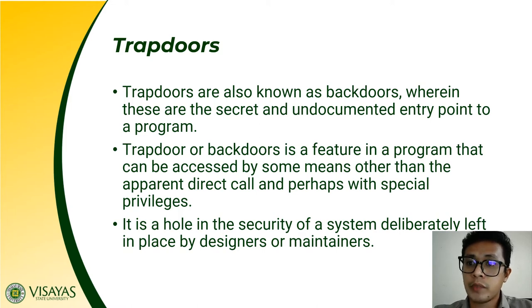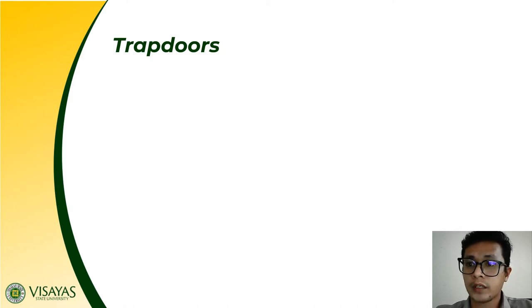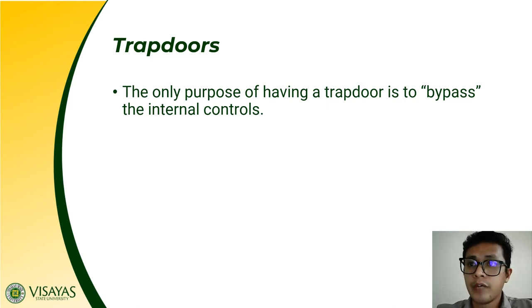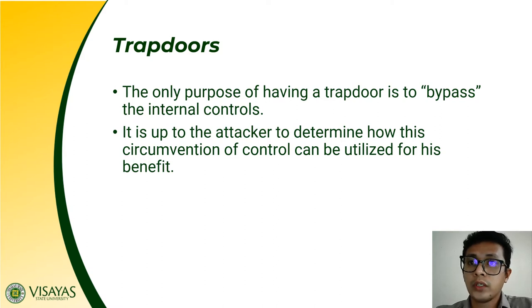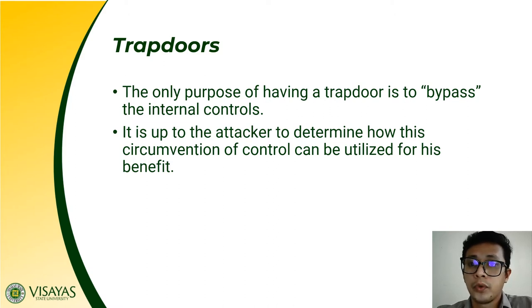Once a program is already deployed, this trapdoor should be removed because it paves the way for attackers to gain access to the system. The only purpose of having a trapdoor is to bypass internal controls. It is up to the attacker to determine how this circumvention of control can be utilized for their benefit. Once the attacker can gain access to the system, it is for them to do whatever they please in destroying the system.